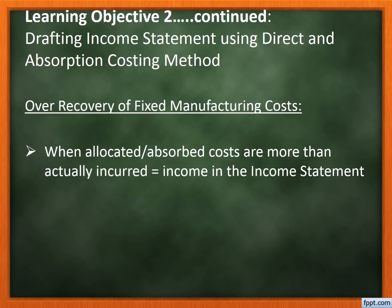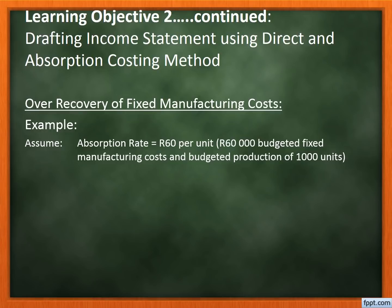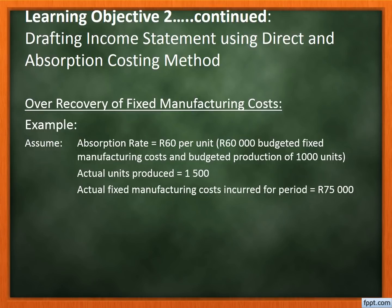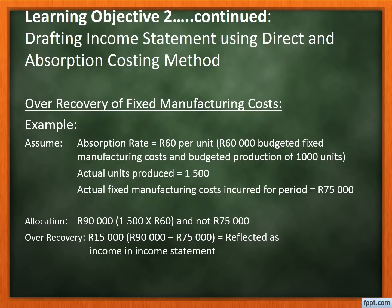An over recovery is when the allocated or absorbed cost is more than the fixed manufacturing costs actually incurred, and it is reflected as income in the income statement. To illustrate: assume the predetermined absorption rate is 60 rand per unit, based on a budgeted fixed manufacturing cost of 60,000 rand and budgeted production of 1,000 units. If actual units produced are 1,500 and actual fixed manufacturing cost is 75,000 rand, we would allocate 90,000 rand (1,500 units × 60 rand). Therefore there is an over recovery of 15,000 rand, reflected as income.